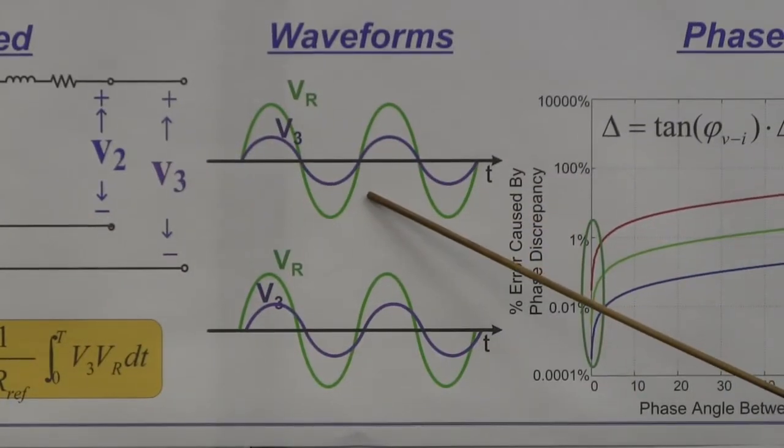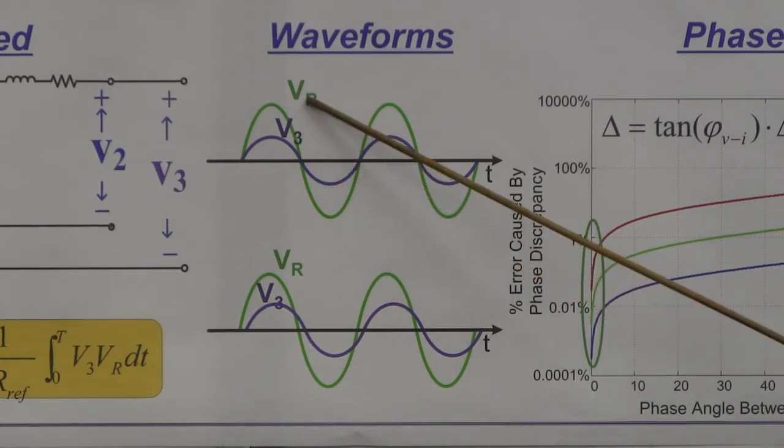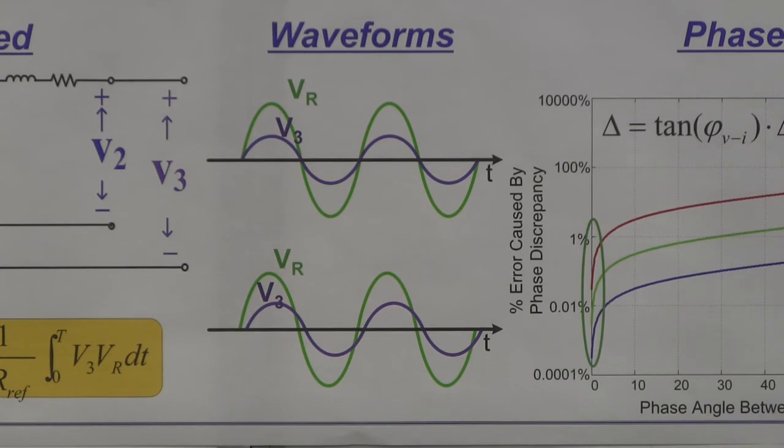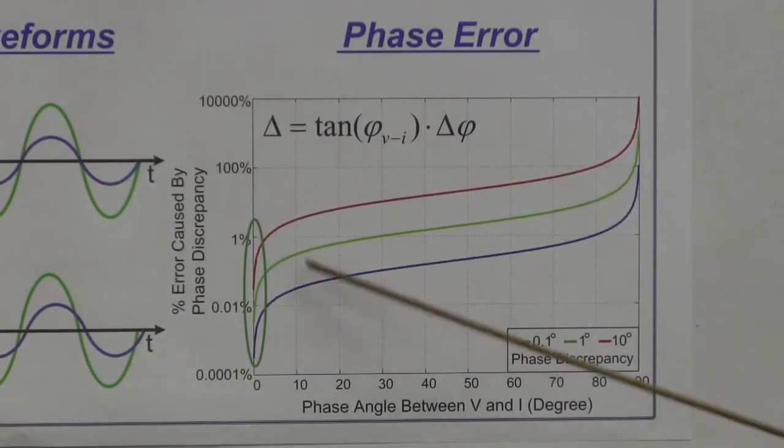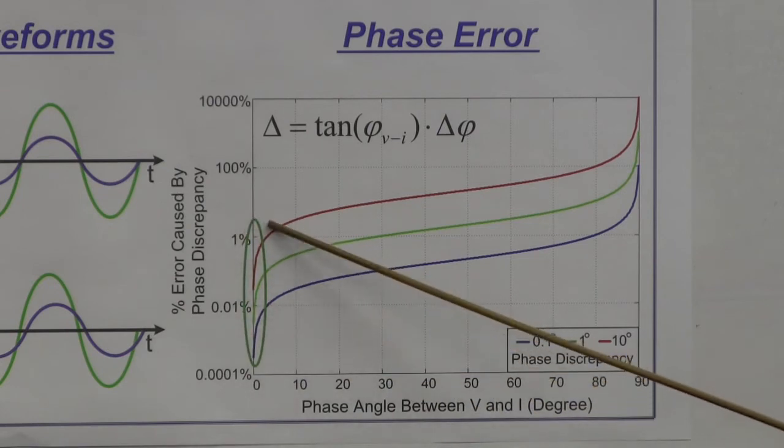This is a typical waveform. If the capacitor is just resonant with this inductor, V3 and Vr will be in phase. Now look at this error graph. Our measurement is working at this non-sensitive area at zero degrees.